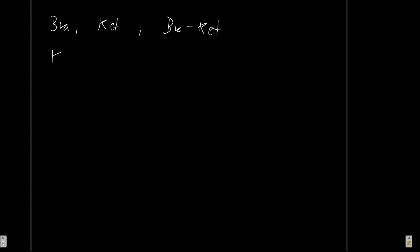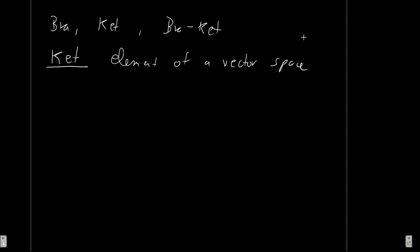So what is a ket? A ket is going to be the element of a vector space. Depending on what exactly we're dealing with, this could be a vector itself or it could be some complex function. So if we have some state vector that we call psi, we can represent it by a ket vector — it's psi inside of a line and bracket. This is just going to be some state vector, a vector or a complex function, depending on what we're dealing with.